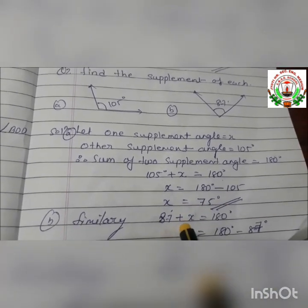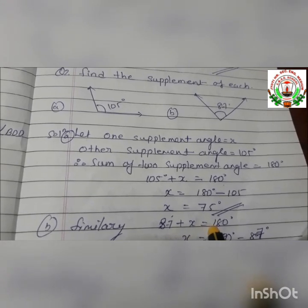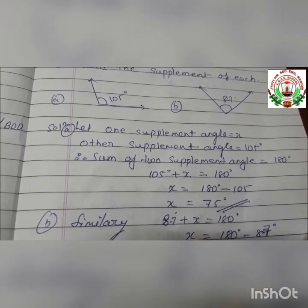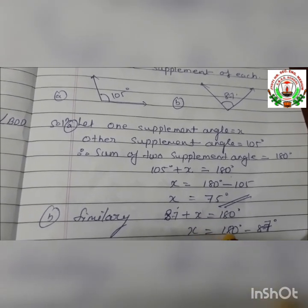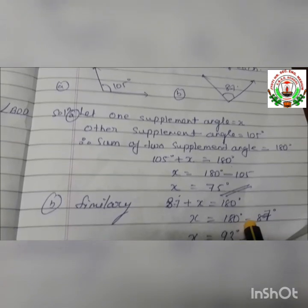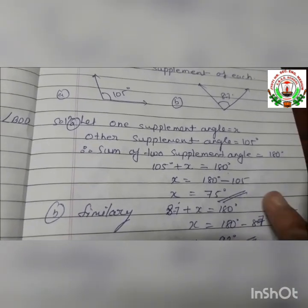Similarly for part B, 87 plus X equals 180, so X equals 180 minus 87, giving X a value of 93 degrees.